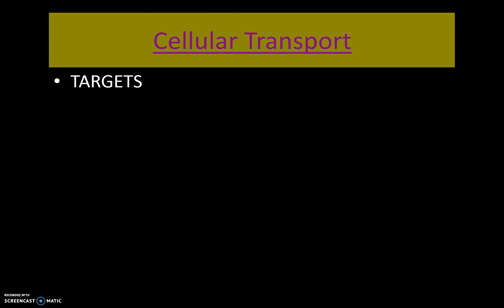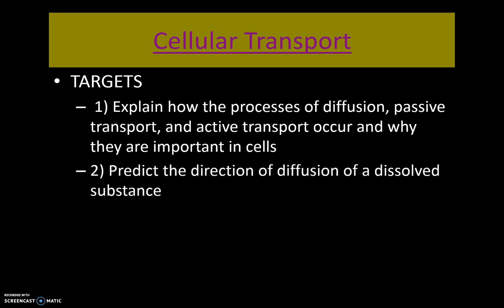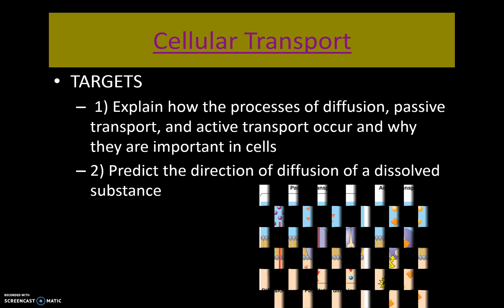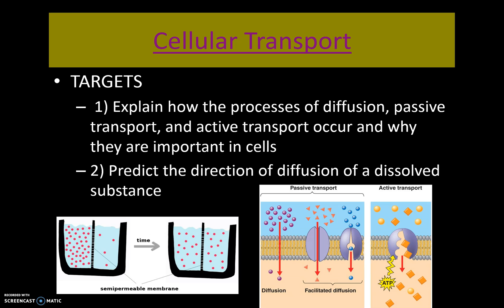This is the fourth recording on the homeostasis and the plasma membrane unit for students in Mrs. Stout's biology classes at Limestone Community High School. In this last section, you're going to be looking at cellular transport, or the movement of materials into and out of the cell. Your focuses should be to be able to explain how diffusion works, how passive transport works, and how active transport works, and why that even matters to cells. You also should be able to predict the direction of diffusion of a dissolved substance when given a diagram or image.